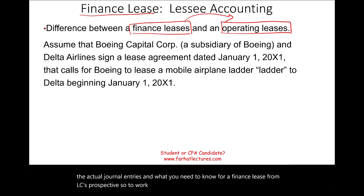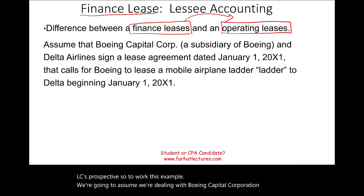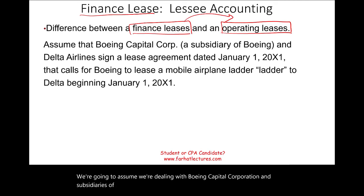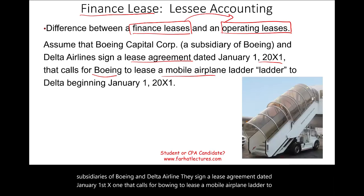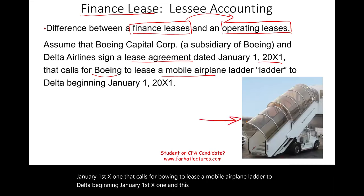To work this example we're going to assume we're dealing with Boeing Capital Corporation, a subsidiary of Boeing, and Delta Airlines. They sign a lease agreement dated January 1st, X1, that calls for Boeing to lease a mobile airplane ladder to Delta beginning January 1st, X1. We're going to call it simply 'the ladder.' Now let's take a look at the details of the agreement.